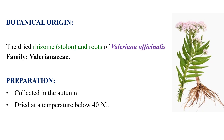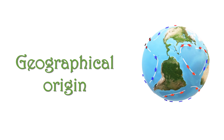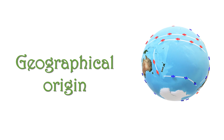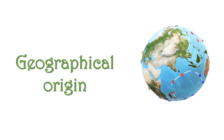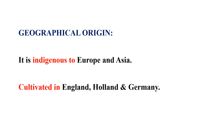The botanical origin consists of the dried rhizomes and roots of Valeriana officinalis, family Valerianaceae. It is usually collected in autumn and dried at a temperature below 40 degrees. Geographically, it is indigenous to Europe and Asia and is cultivated in England, Holland, and Germany.